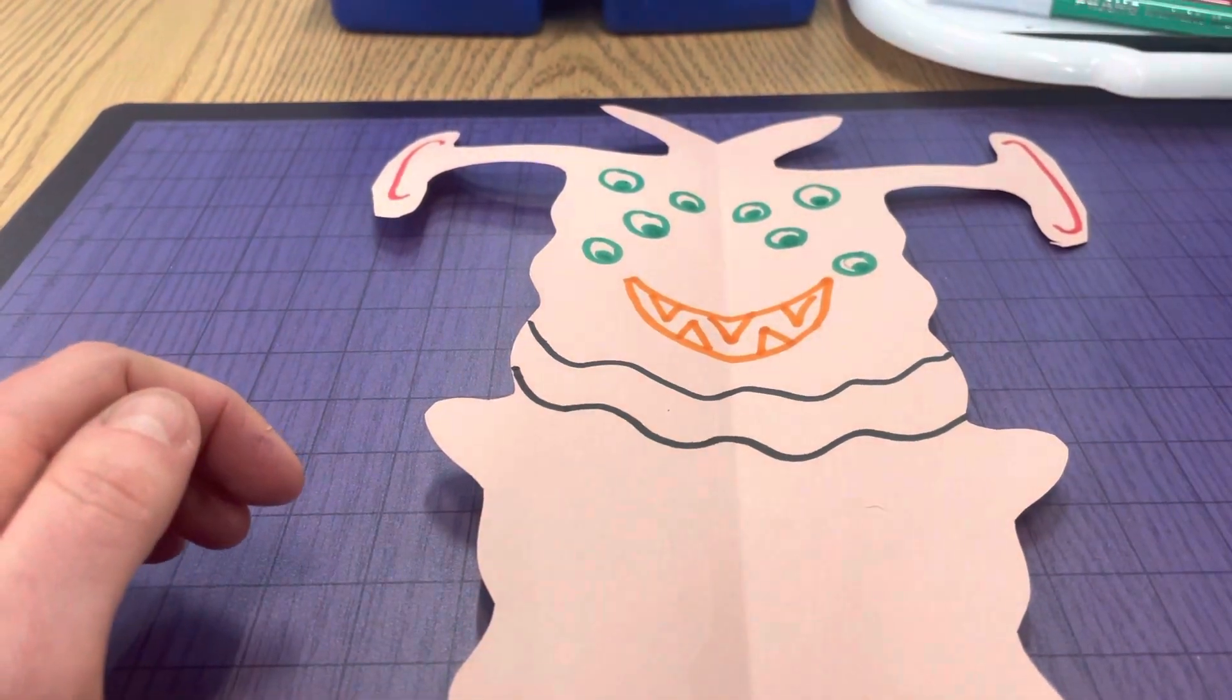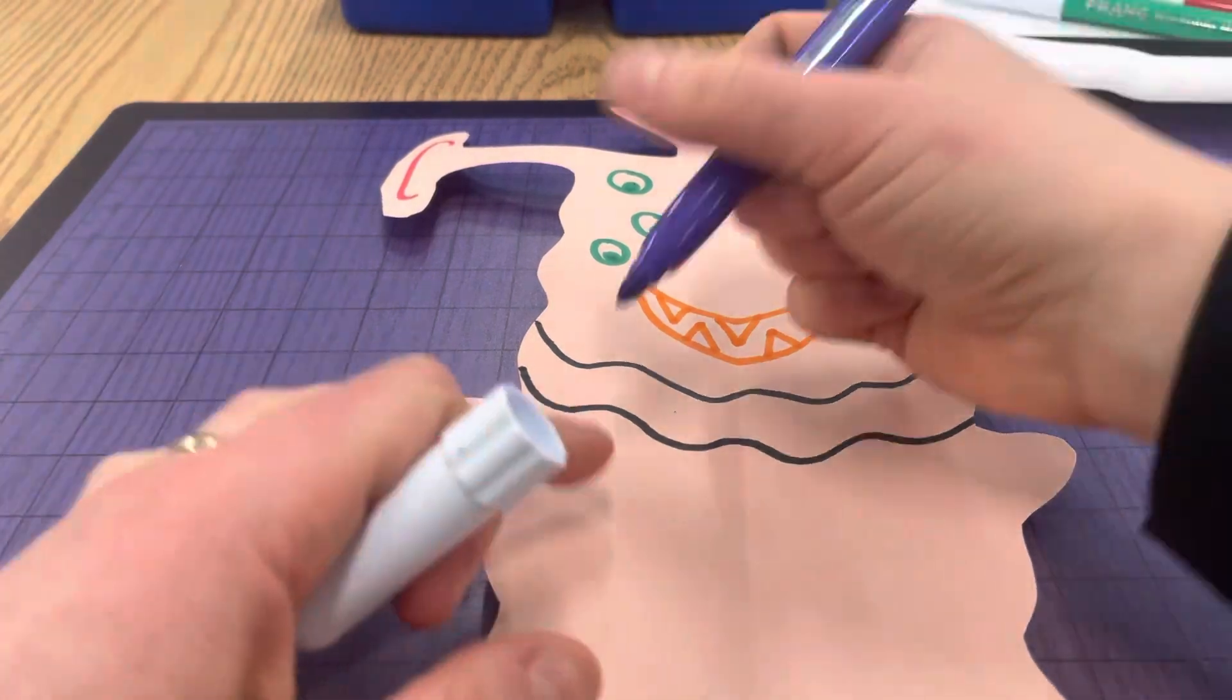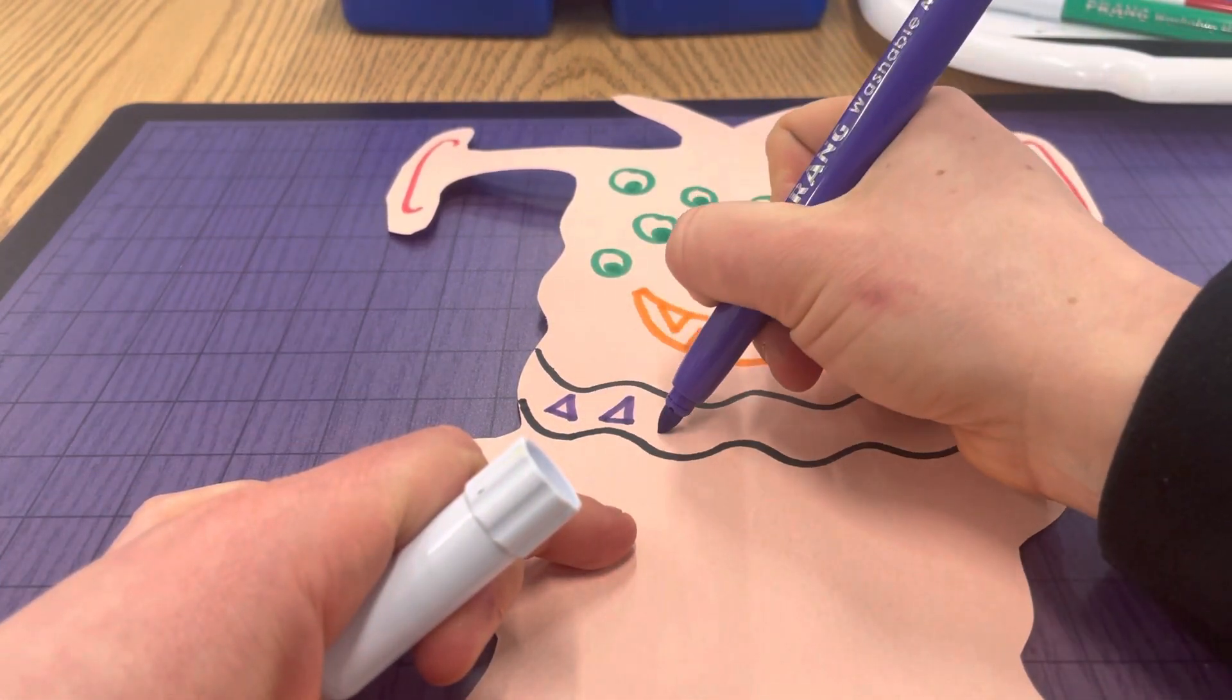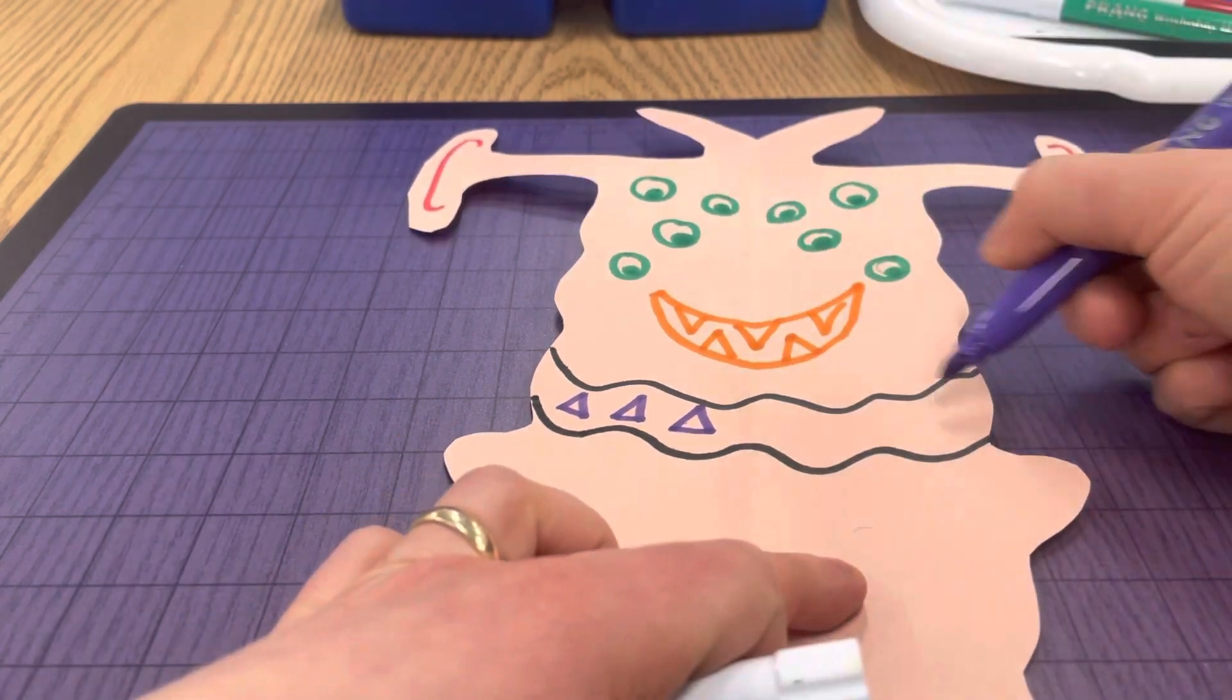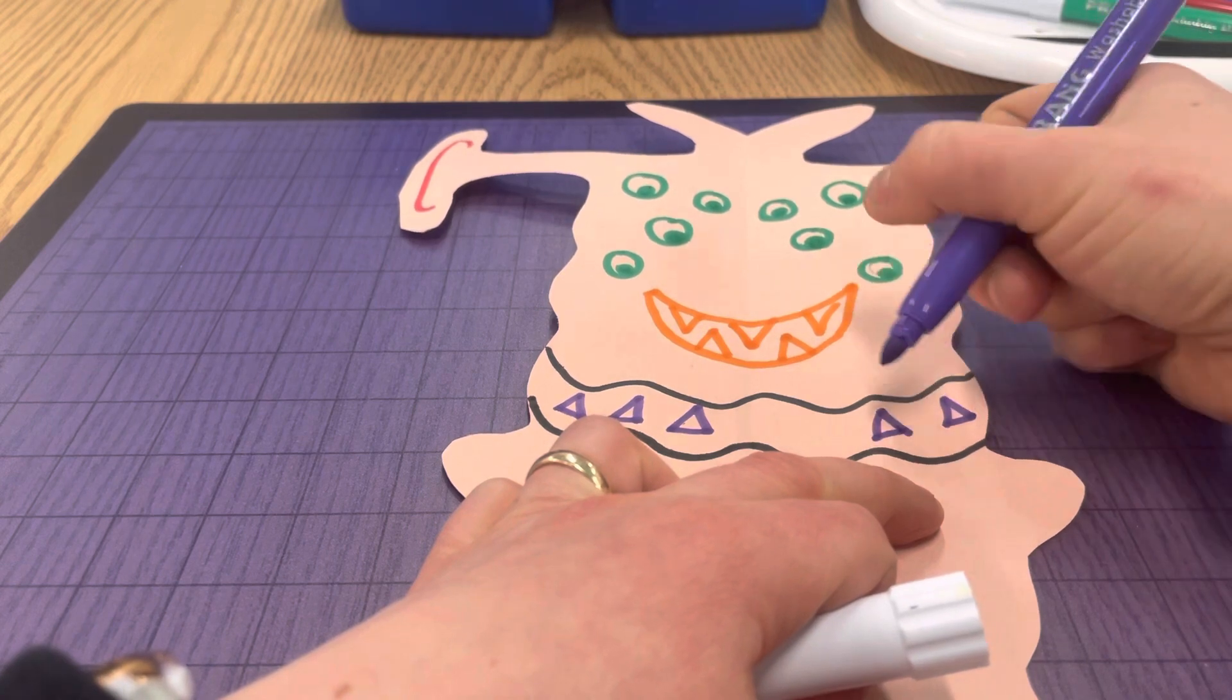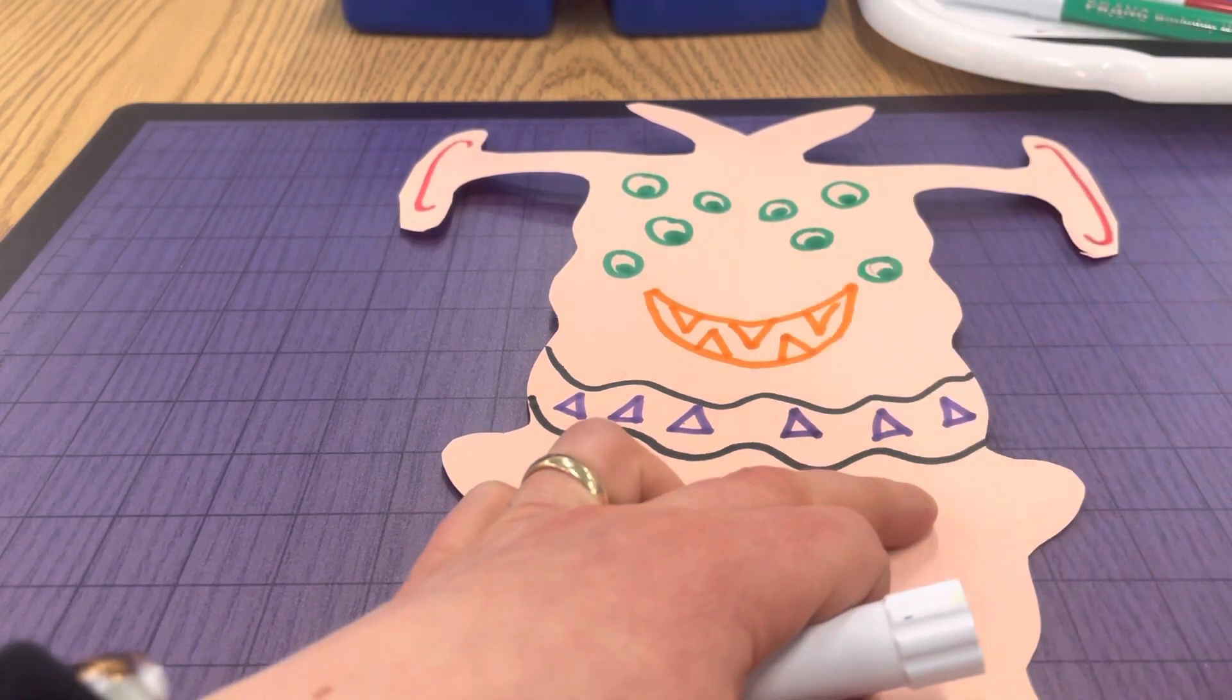And if I do some purple triangles as a pattern right here, that means that I need to do three triangle patterns over here. Just like that.